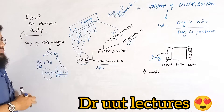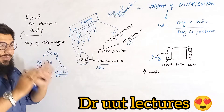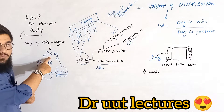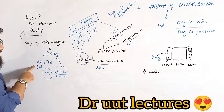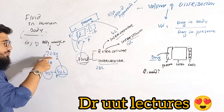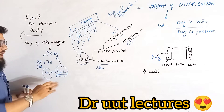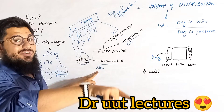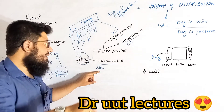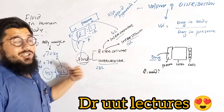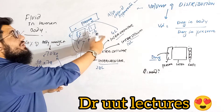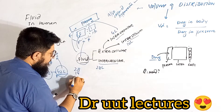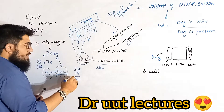In short, fluid in the human body is 60% of body weight. For a 70 kg person, 60% of 70 kg gives 42 liters of fluid — the rest is solid weight. Of those 42 liters: 28 liters reside in the cells (intracellular), 10 liters are in the interstitium, and 4 liters are in the intravascular compartment. Adding them up: 28 + 10 + 4 = 42 liters. This is the entire fluid distribution.